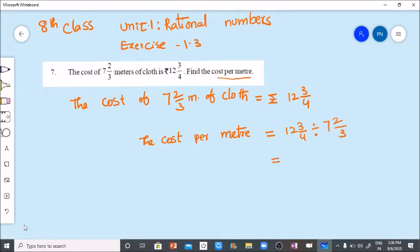Let's change the mixed fraction into improper fraction. 12 4s are 48 plus 3, 51 by 4 divided by... 7 3s are 21 plus 2, 23 by 3.